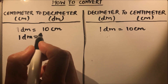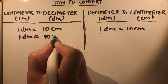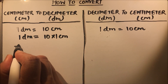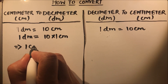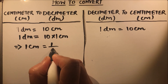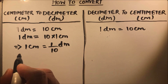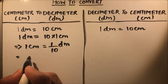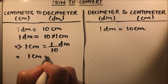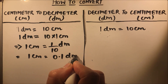One decimeter is 10 times one centimeter, which gives us that one centimeter is equal to one over 10 decimeter, or we can write it as one centimeter equals 0.1 decimeter.